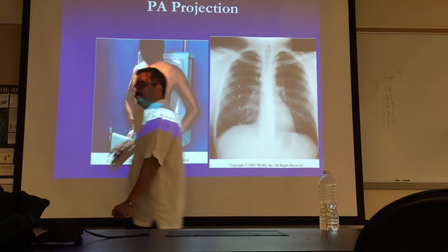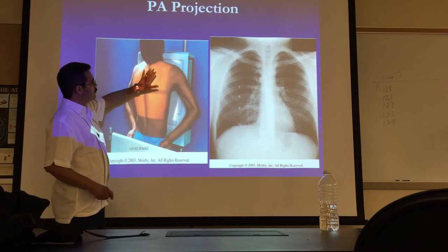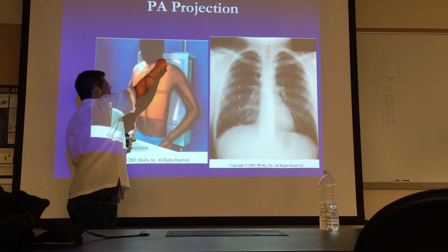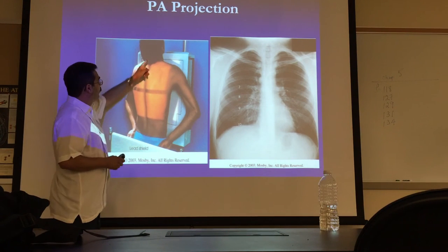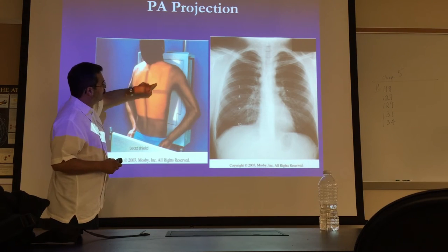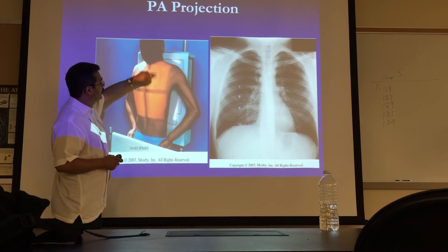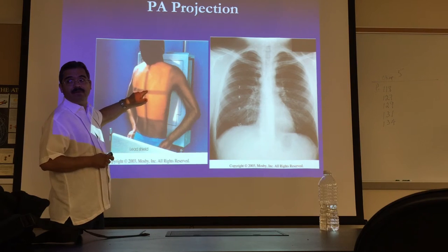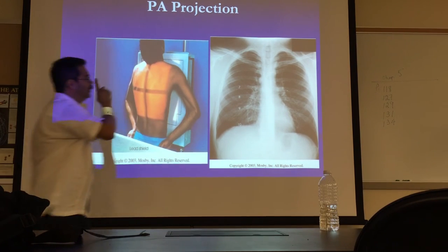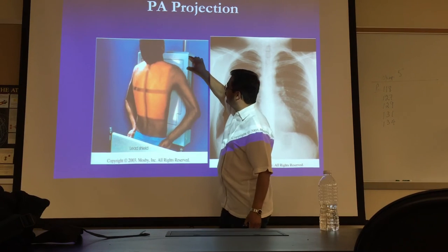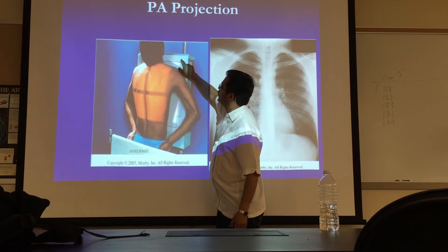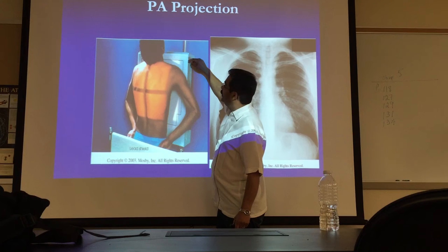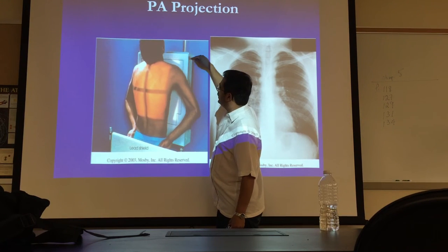When we look at a radiograph, this is what we want: the patient with his chest against the board, shoulders forward. Make sure you include from the apices all the way to the costophrenic angles. The central ray is placed at the bottom, at the angle of the scapula, and the mid-sagittal plane, which is at the level of T7. The image receptor is placed one and a half to two inches above the shoulder.